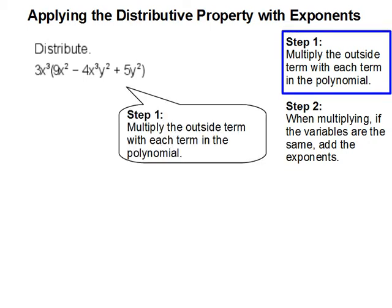Step one: multiply the outside term with each term in the polynomial. We are going to multiply each term by the outside term, which is 3x³.